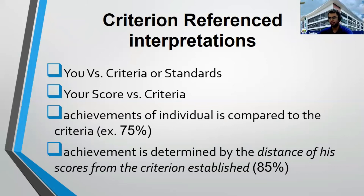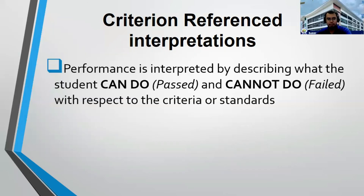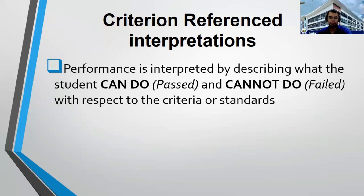For the LET exam, if 75% is the passing rate and you get a score of 85%, it means you passed and you are 10% above the criteria. If you are at 74%, you are 1% short of the criteria. Performance is interpreted by describing what the student can do — meaning passed — or cannot do — meaning failed — with respect to the criteria. In criterion reference interpretations, it's simply passed or failed: your performance versus the criteria.